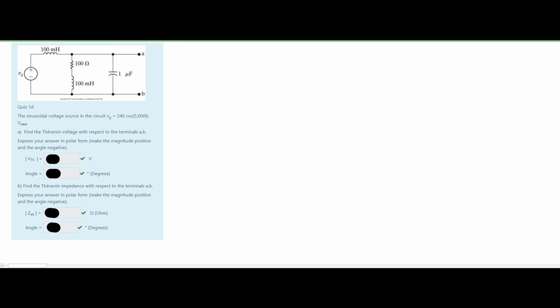For this problem, we are asked to find the Thevenin voltage with respect to terminals A and B. We need to express our answer in polar form, making the magnitude positive and the angle negative for part A. We are given that our sinusoidal voltage source is V(G) = 240 × cos(5000t), measured in Vrms.